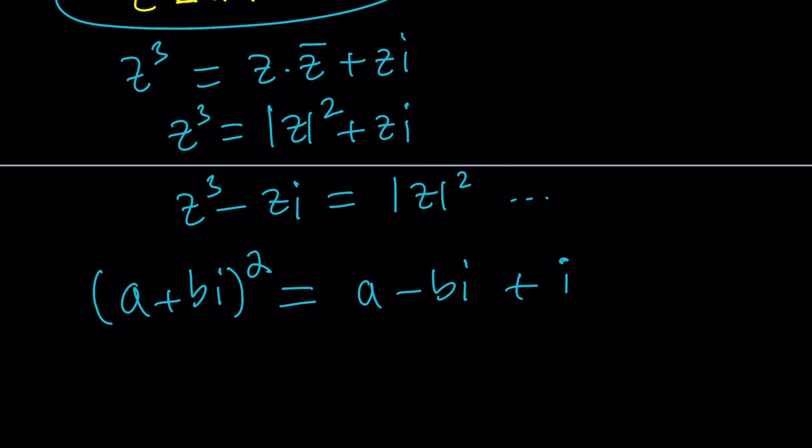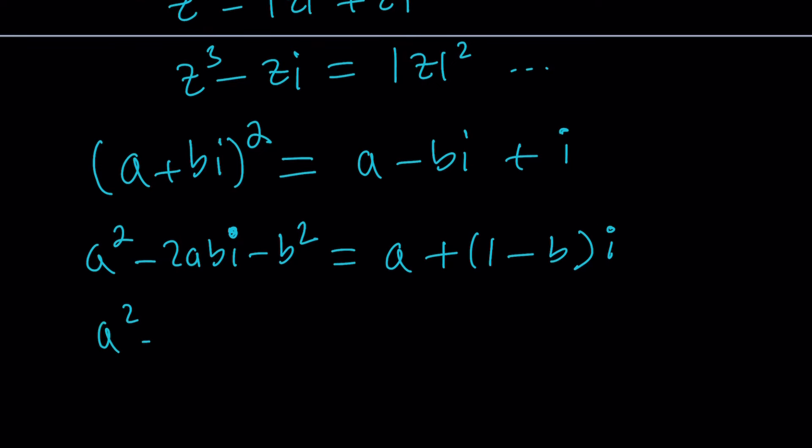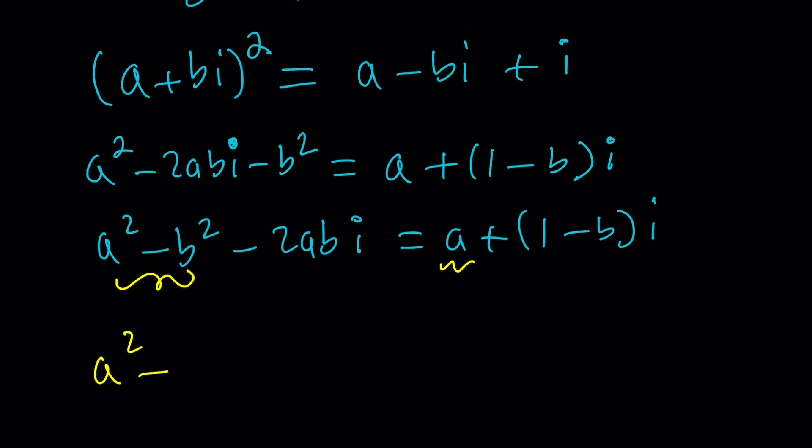How do we solve this equation? Let's go ahead and expand the left hand side. We get a squared minus 2abi plus b squared i squared, but i squared is negative 1. Then we can write this as 1 minus b as the imaginary part of the right hand side. Let's separate the real and imaginary parts so we can set up equations. So a squared minus b squared equals a. The imaginary parts: negative 2ab equals 1 minus b.